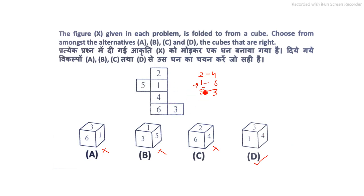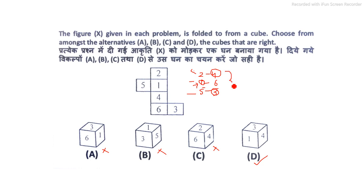A cube can be made from an opened figure only when, out of the three opposite pairs, exactly one number from each pair is visible on the assembled cube. Here we are seeing one, three, and four — from the pair (two/four) we see four, from the pair (one/six) we see one, and from the pair (three/five) we see three — so from each pair one face is shown, confirming the answer D.